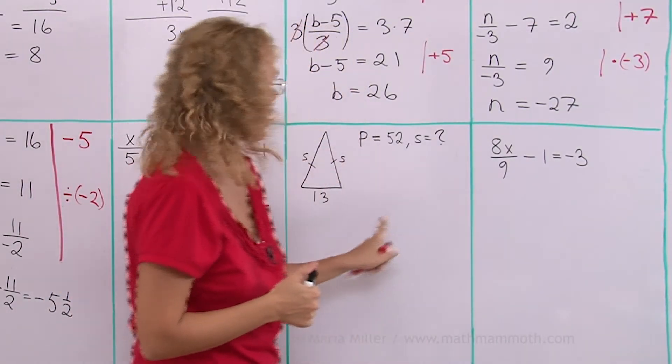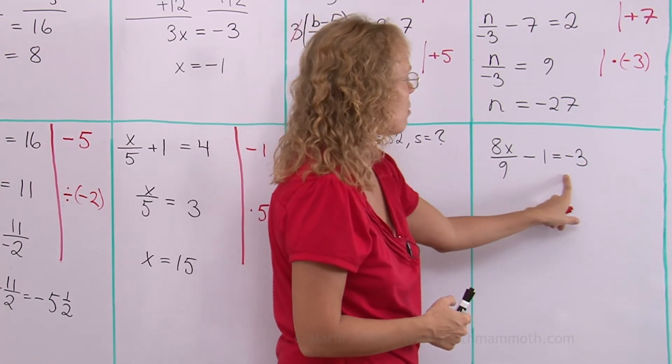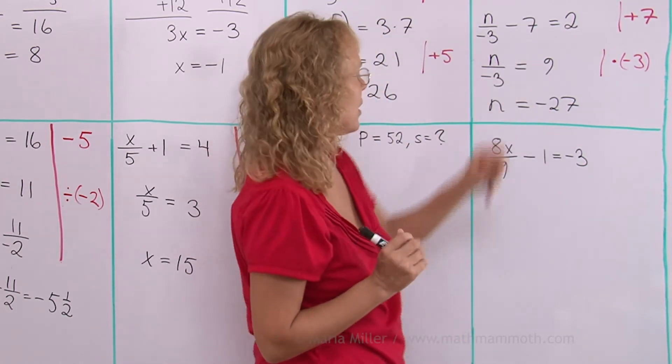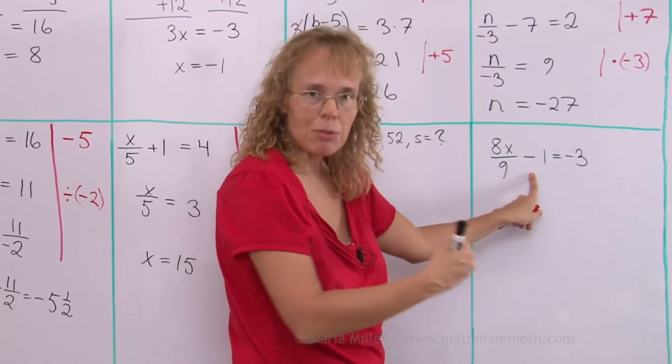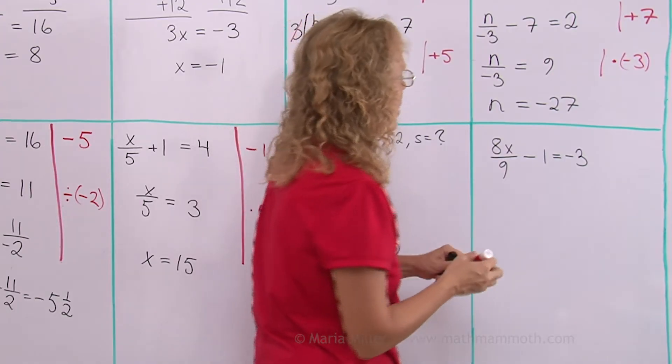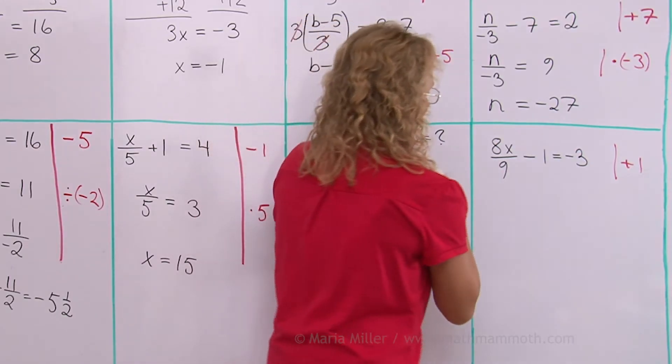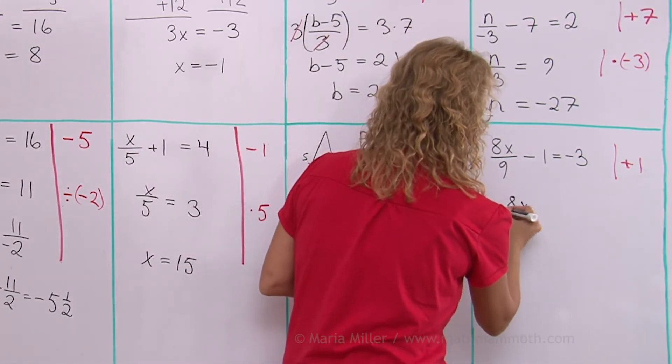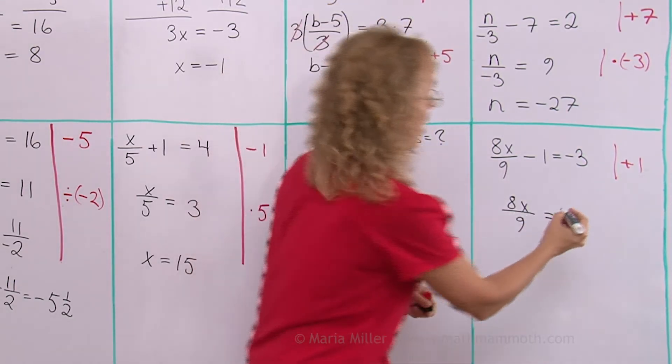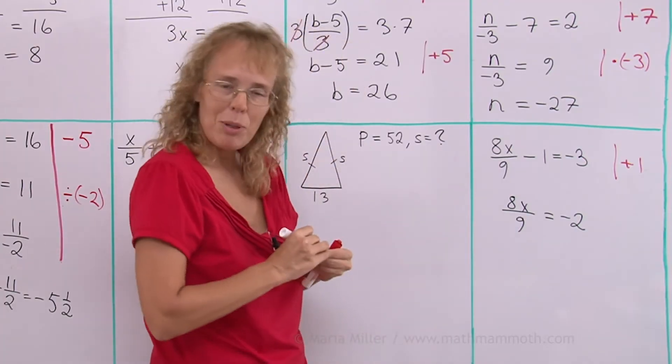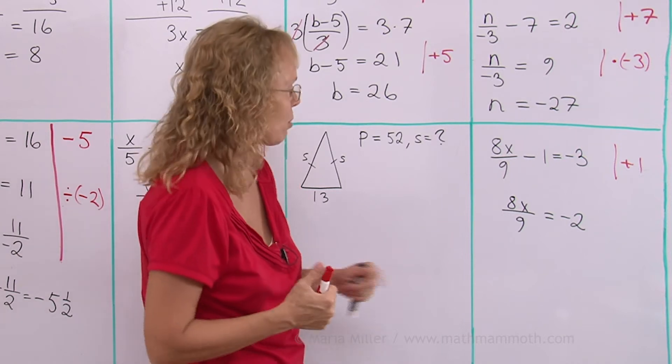I'll solve this one first and then we come to this geometry problem. Here 8x over 9 minus 1 equals negative 3. This is the same thing as what we had here. I want to have the x term alone here so I'll first get rid of this negative 1 or subtract 1. 1 is subtracted so I'll add 1 to both sides. And then I'll get 8x over 9 here alone. Over here, negative 3 plus 1 would be negative 2. And now what? Do you remember?